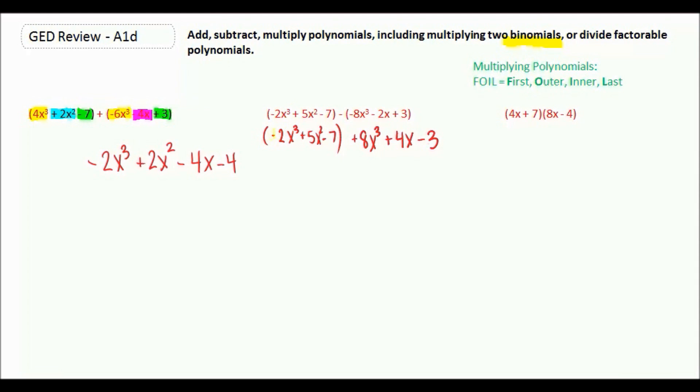We have our negative 2x cubed and our 8x cubed. We have a 5x squared and nothing to match up with it. We have a negative 7 and a negative 3, and then a 4x.